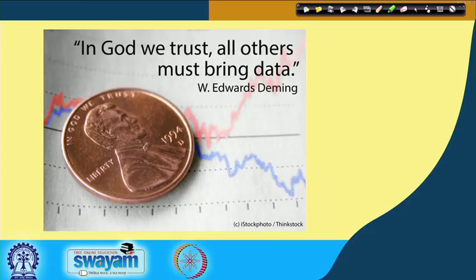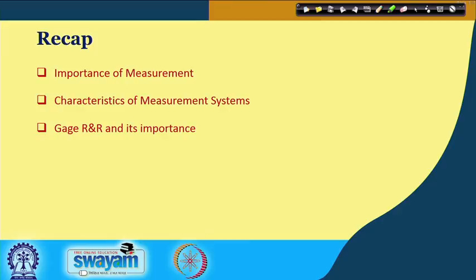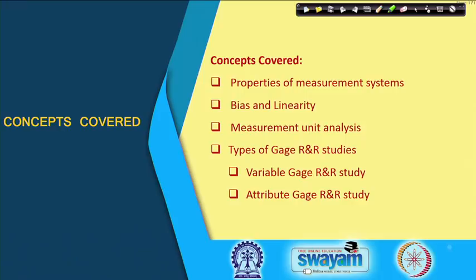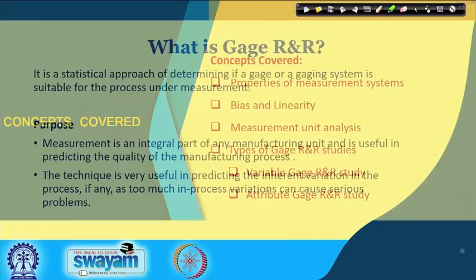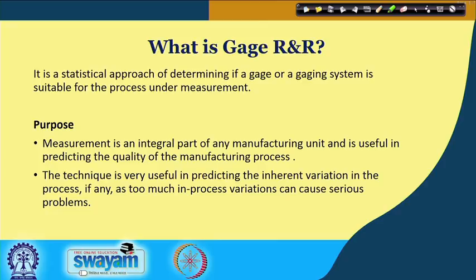There is a principle called GIGO — garbage in, garbage out. If your data quality is poor, then whatever analysis you conduct will draw faulty conclusions and misguide you in taking corrective actions. We need data and we need quality data, and hence the importance of the measurement system is crucial. This lecture 21 will focus on important properties of the measurement system: bias and linearity, measurement unit analysis, and types of Gauge R and R — variable and attribute Gauge R and R study.